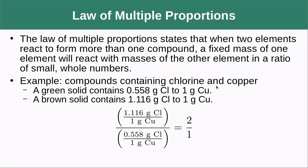If we have two different compounds, both containing chlorine and copper, we have our green solid and our brown solid. If we took the ratios of chlorine to copper, and then we divided those two, we see that the brown solid has two chlorines for every one chlorine in our green solid. That means that the brown solid has twice as many chlorines.